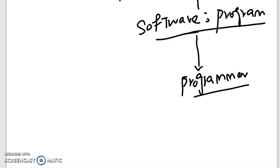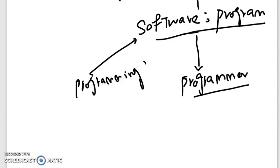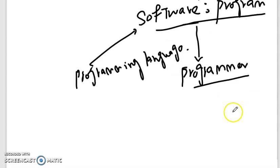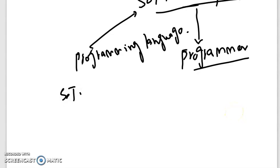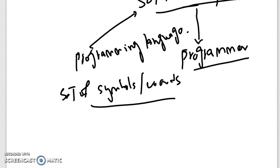Software or a program is written in a programming language. Programming languages are used to write software. A programming language is a set of symbols, or we can say a set of words, that are used to write instructions for computer systems. Through these symbols and words we write instructions, and these instructions are converted into the language that the computer understands, and then these instructions run on the computer system.